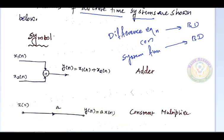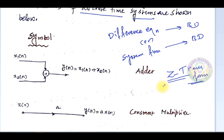Any system can be represented using a block diagram. It is usually used to visualize what operations are carried out in the particular system. That is the main reason why we use block diagram representation. For discrete time systems, we are going to use the Z transform to represent a system function in the form of a block diagram.